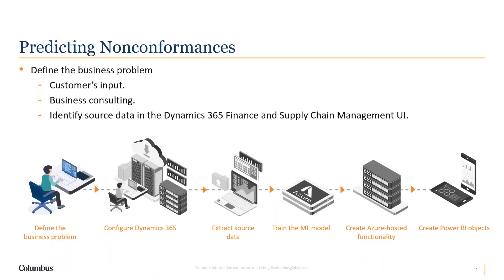What we're going to be discussing today is predicting non-conformances. We recognize that being able to predict when we're likely to have problems with the quality of our product will allow us to be proactive about addressing those problems, rather than risk having the product fail an inspection and potentially having to be reproduced. The obvious benefits are cost savings and even patient safety, because it allows us to stop the quality issue from developing and potentially making its way further downstream.